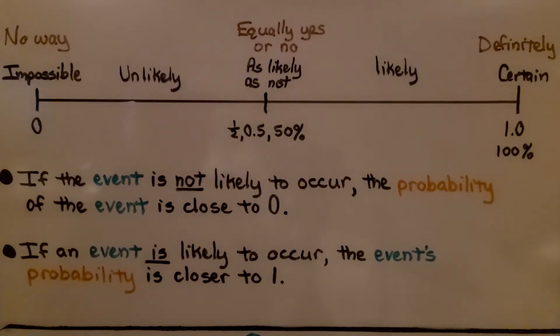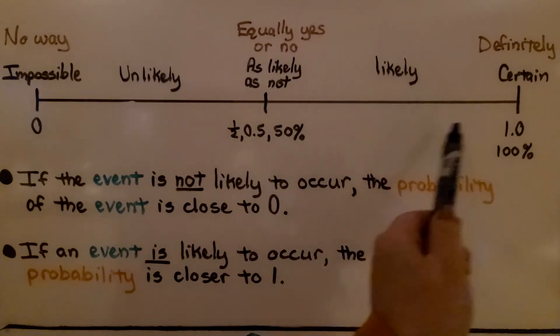If the event is not likely to occur, the probability of the event is close to zero. So if it's not likely to occur, it will be somewhere around here, closer to zero. If an event is likely to occur, the event's probability is closer to one.